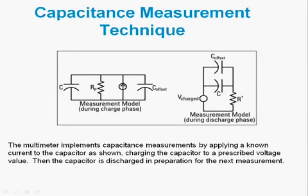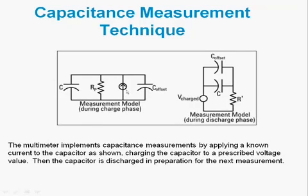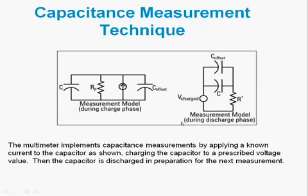This is not a typical measurement made by DMMs, and it's only recently that Agilent has developed some DMMs that will make and measure capacitors. The technique we use is to apply a known current to the capacitor, as shown here, in the charging phase. We charge up the capacitor to a known voltage, and it's during this phase that we actually make the measurement. However, we do need to discharge the capacitor in preparation for making another capacitance measurement. So the total cycle involves a charge phase and a discharge phase.